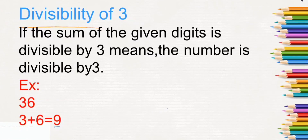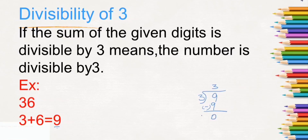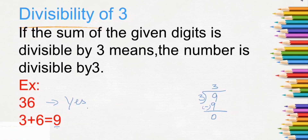9 is divisible by 3 — 3 times 3 is 9. So, 9 is divisible by 3. That means 36 is divisible by 3.